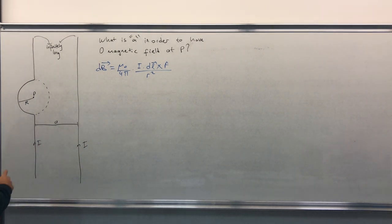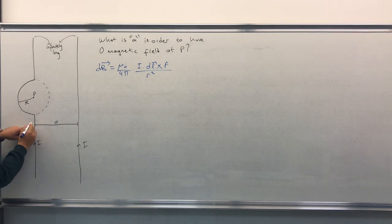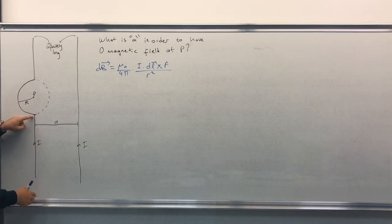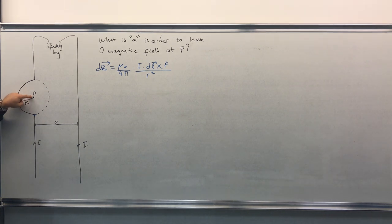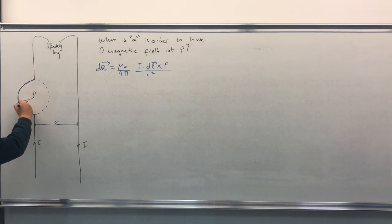By the way, for this line from here to minus infinity there is no effect on the magnetic field here. And from here to infinity there is again no effect to the magnetic field at P. All we will consider will be this semicircle.